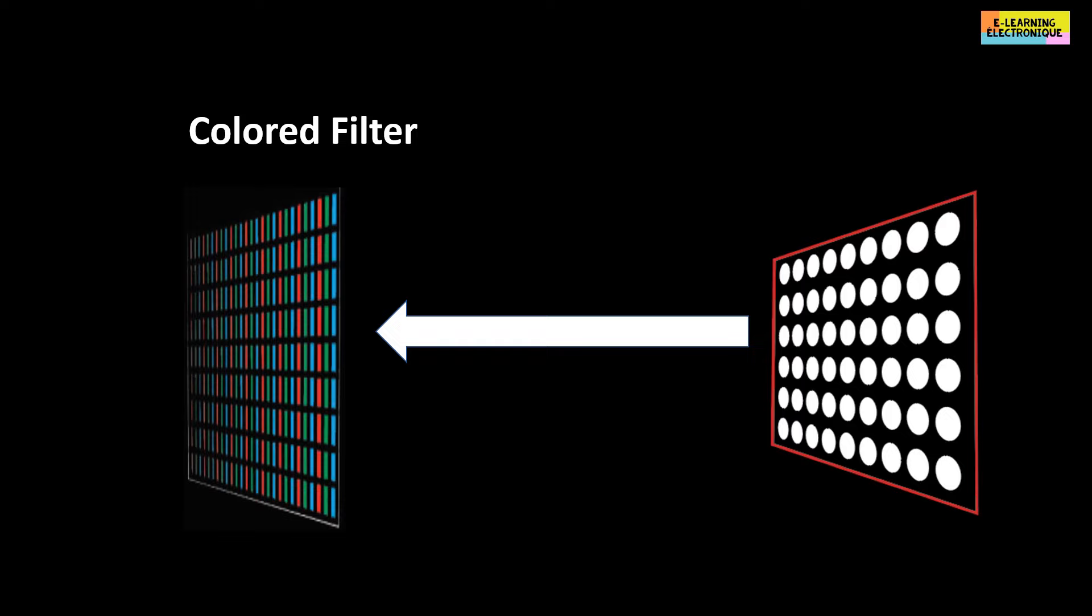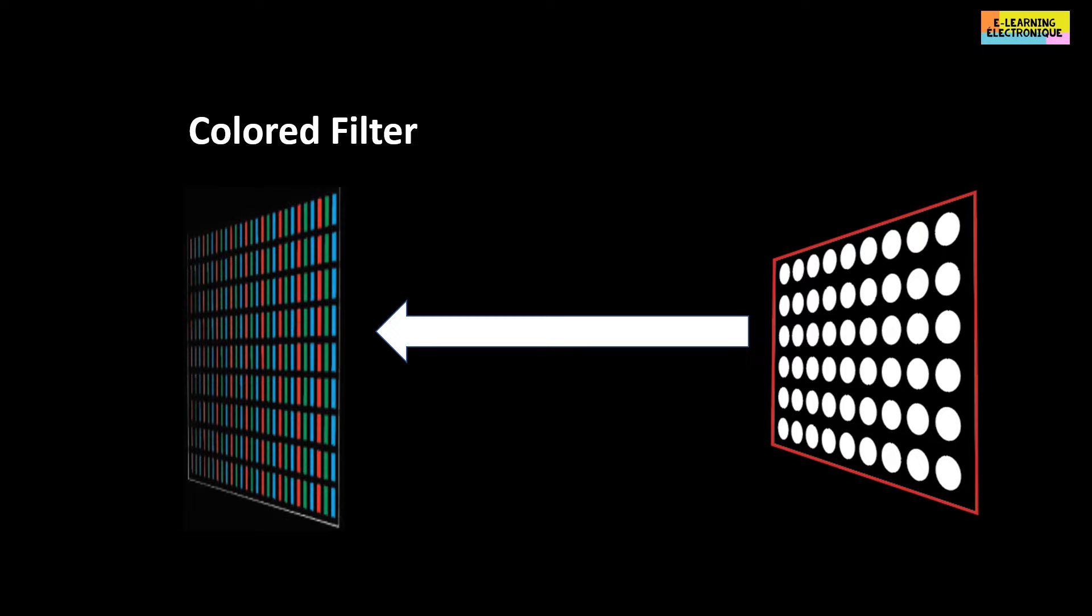To transform the white light emitted by the backlight into color, a colored filter is placed on the outer face of the front glass. This filter is made from a resin in which is included pigments in suspension colored in red, green and blue.